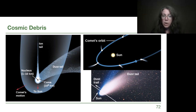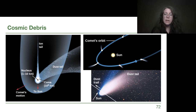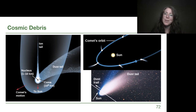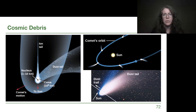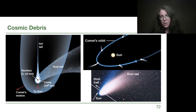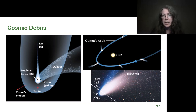Comets are mostly ices, though they also have rocky materials. They're sometimes referred to as dirty snowballs. Think of the blackened snow on the side of the road at the end of a long Michigan winter after all the car exhaust has gone by—that's actually a reasonable picture of what comets look like. They aren't shiny pristine water ice; they have all this extra stuff mixed in, like the car exhaust, that makes them a dark mixture of all kinds of leftover material.